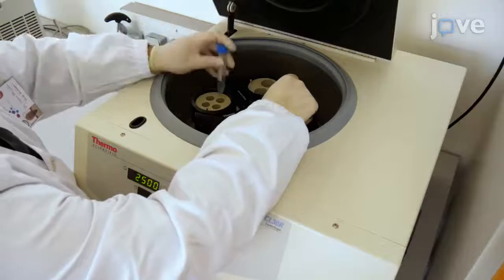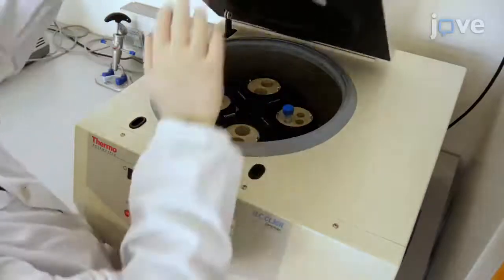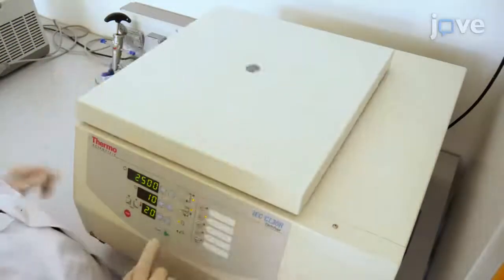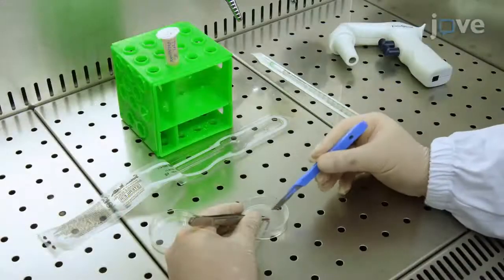Remove the Hanks solution by centrifugation at 2500 times G at room temperature for 10 minutes. Then, with a disposable scalpel, divide the pulp into approximately one millimeter slices.